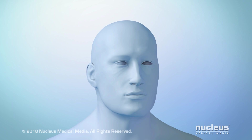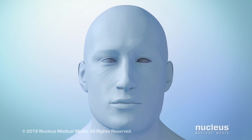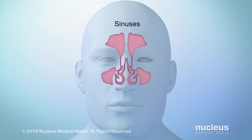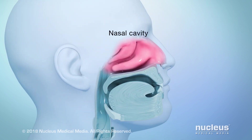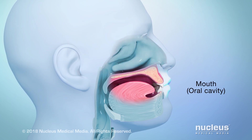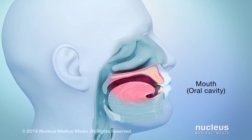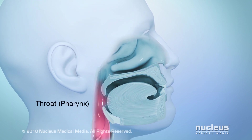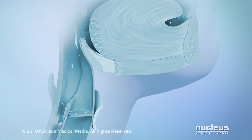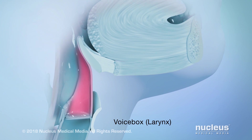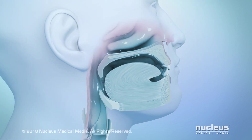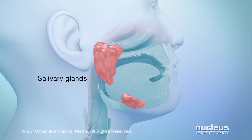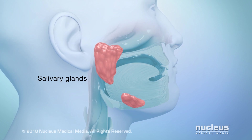Cancer of the head and neck may develop in certain areas, such as your sinuses, which are hollow spaces in the bones of your head around your nose, your nasal cavity, your mouth, also known as your oral cavity, your throat, also known as your pharynx, your voice box, also known as your larynx, and your salivary glands, which are organs that help you digest food.